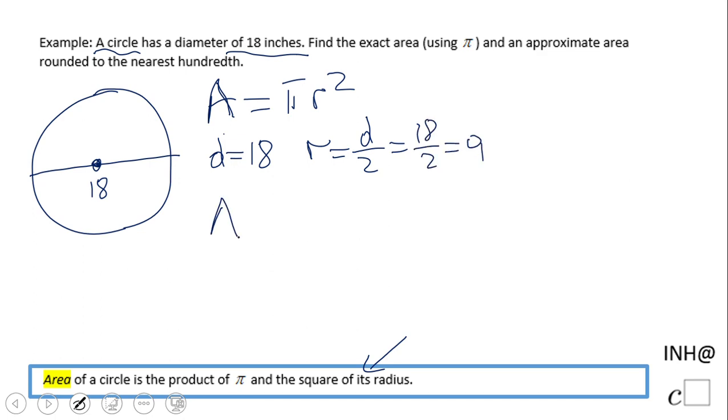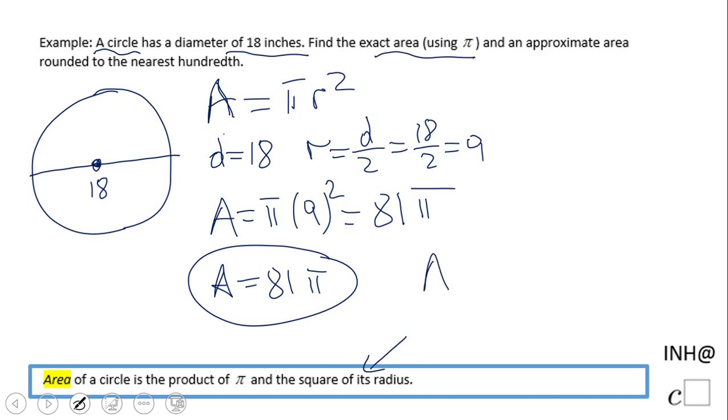Now we can simply plug in 9. We have π times 9², which means 9 times 9, which equals 81π. The area of this circle is 81π. That's the first part where we have the exact area using π. Now we're going to find the approximate area.